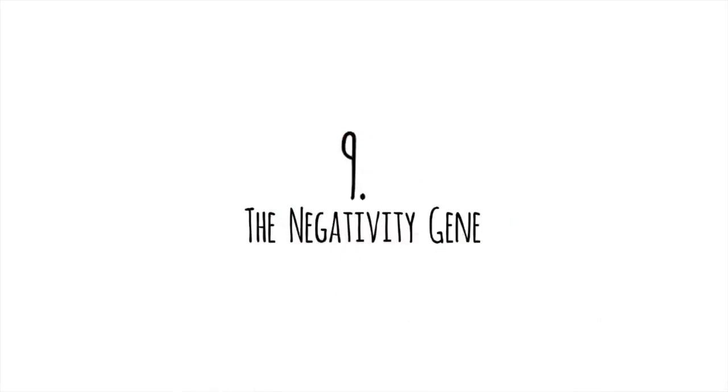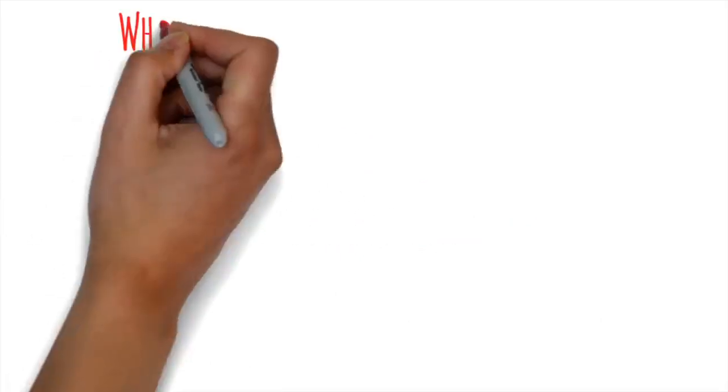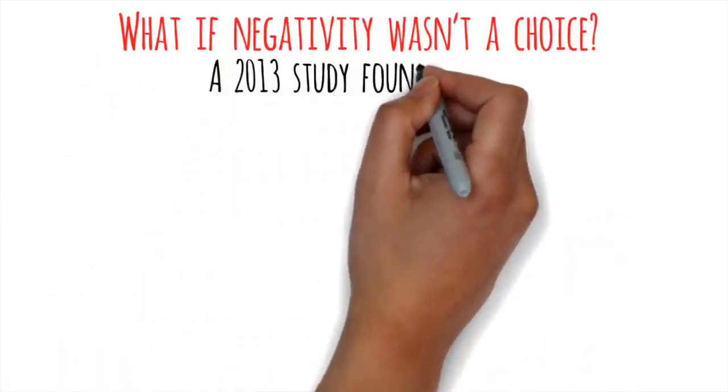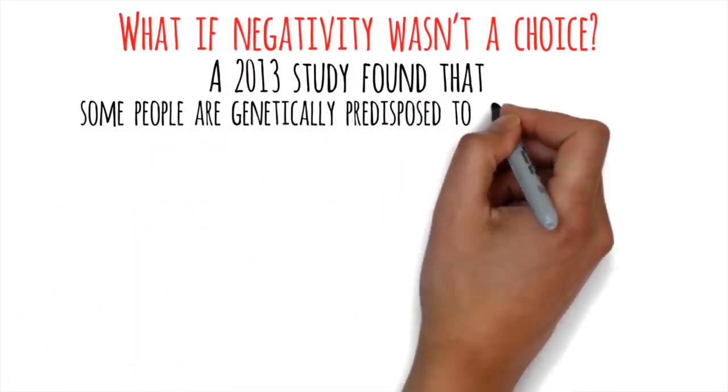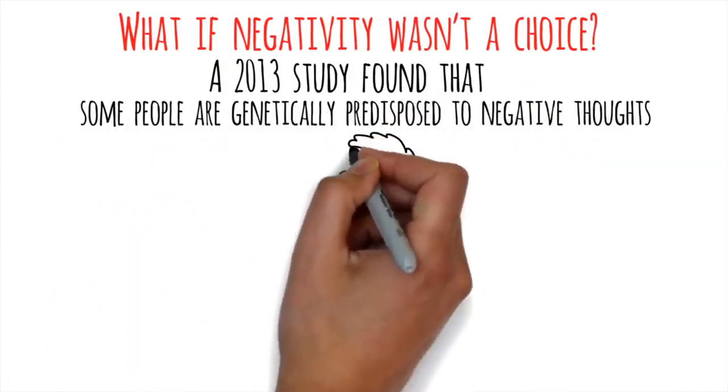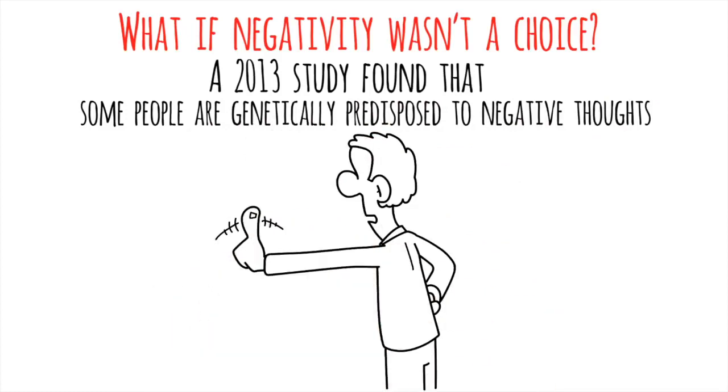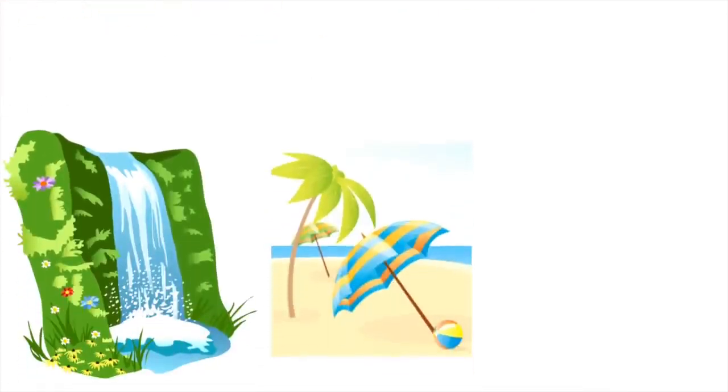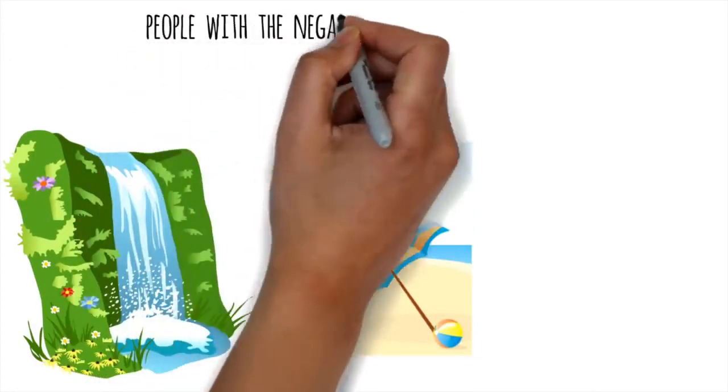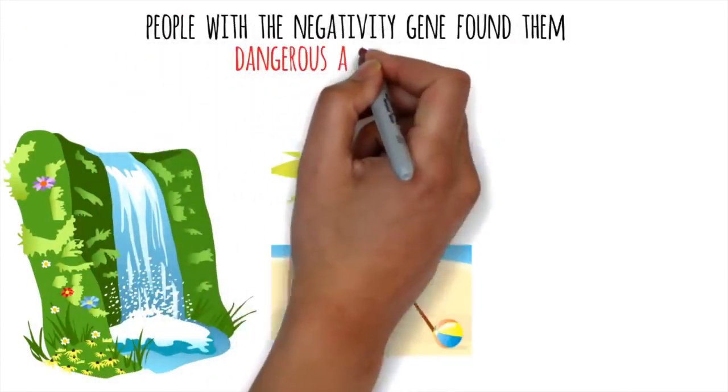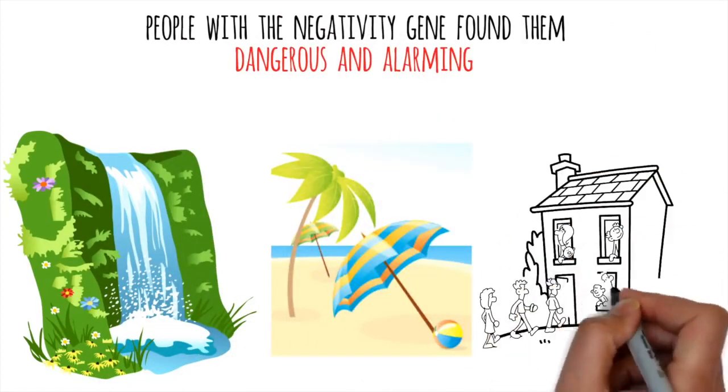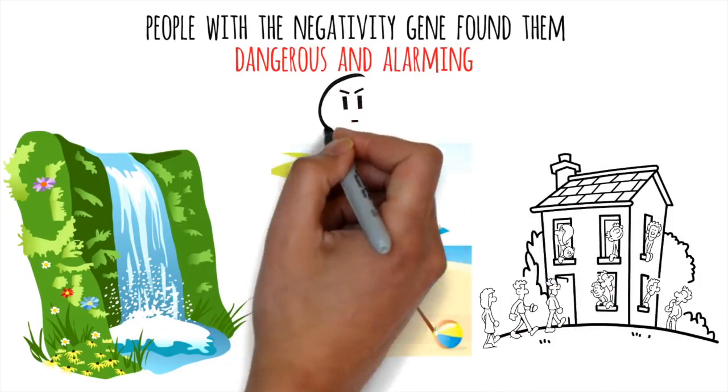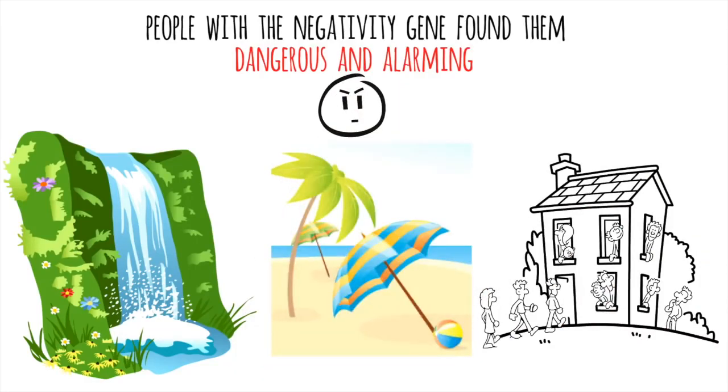Number 9. The Negativity Gene. What if negativity wasn't a choice? A 2013 study found that some people are genetically predisposed to negative thoughts. This means you automatically react with stronger, negative emotions. In that study, researchers looked at how people with this gene reacted to various images. While most people enjoyed pictures of waterfalls and beaches, people with the negativity gene found them dangerous and alarming. When shown a picture of a crowded room, they honed in on angry or sad faces. So, if you're a naturally negative or cautious person, you may have been born that way.